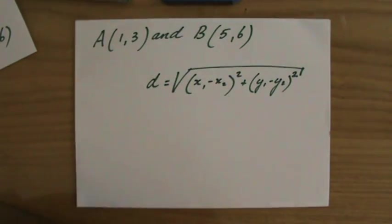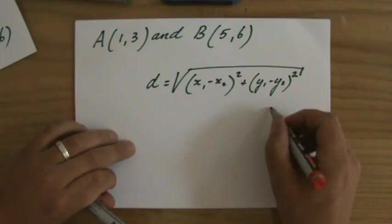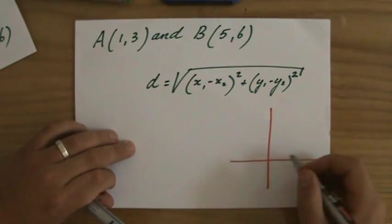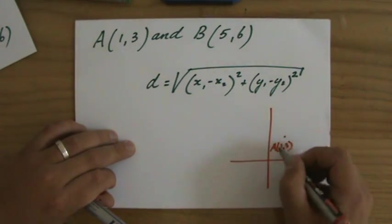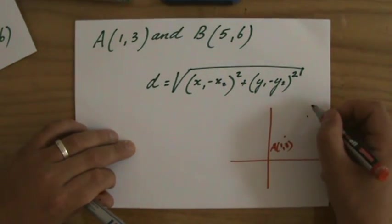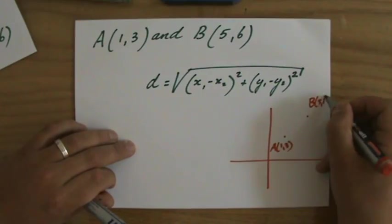Whenever you have to solve a question like that, just make a quick sketch, nothing too accurate. A is 1, 3, that will be there, and you just put A 1, 3, and B is 5, 6, that is roughly over there, 5, 6.